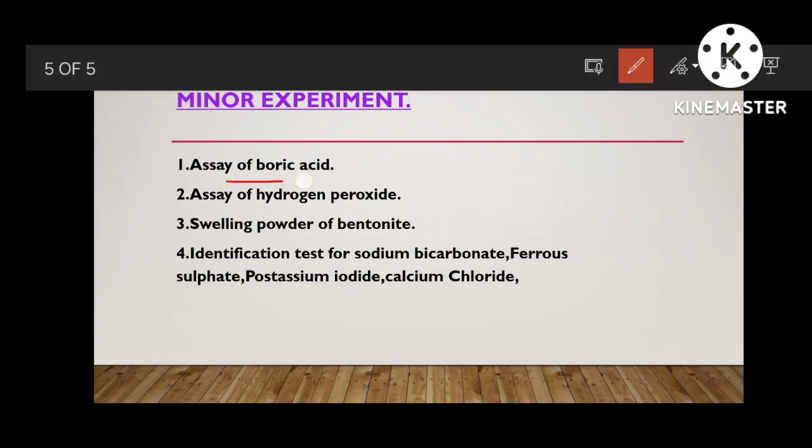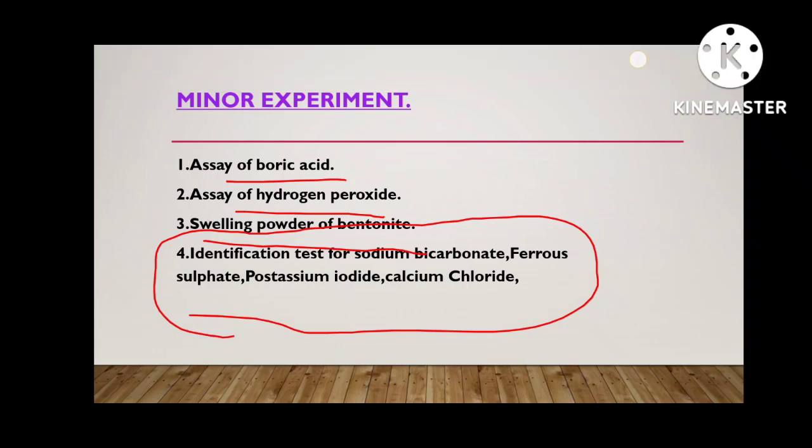Next, minor experiments. Boric acid is very important, then hydrogen peroxide assay, then swelling powder of bentonite. The identification test for sodium bicarbonate, ferrous sulfate, potassium iodide, and calcium gluconate. For all these chemicals you have to practice identification tests. These you have to practice.